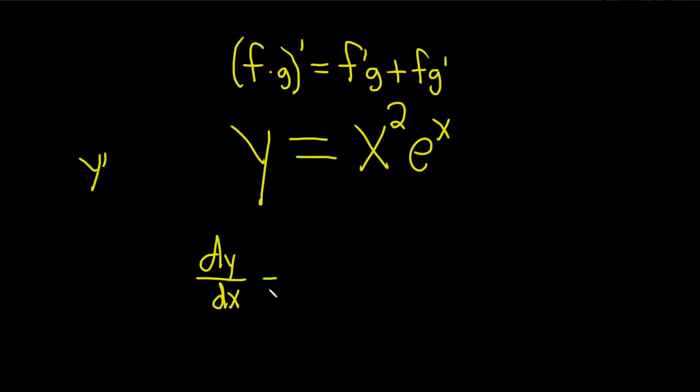It's the derivative of the first. So, the derivative of x squared is 2x, and then times the second, times e to the x, plus the first.